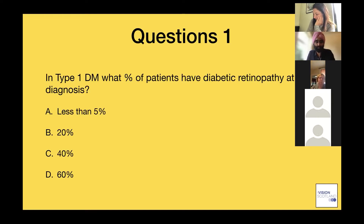The correct answer is A — the vast majority of you got that right. The next question is: in type 2 diabetes, what percentage of patients at the point of diagnosis have diabetic retinopathy?